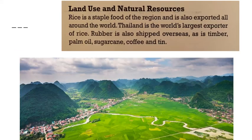The land use and natural resources are great. Rice is a staple food and also part of their biggest exports. Rubber, timber, palm oil, sugar cane, coffee, and tin are also included.